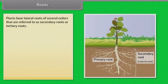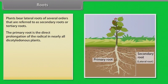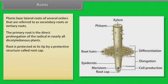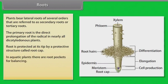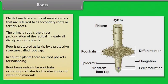Plants bear lateral roots of several orders that are referred to as secondary roots or tertiary roots. The primary root is the direct prolongation of the radicle in nearly all dicotyledonous plants. Root is protected at its tip by a protective structure called root cap. In aquatic plants, there are root pockets for balancing. Root bears unicellular root hairs occurring in clusters for the absorption of water and minerals.